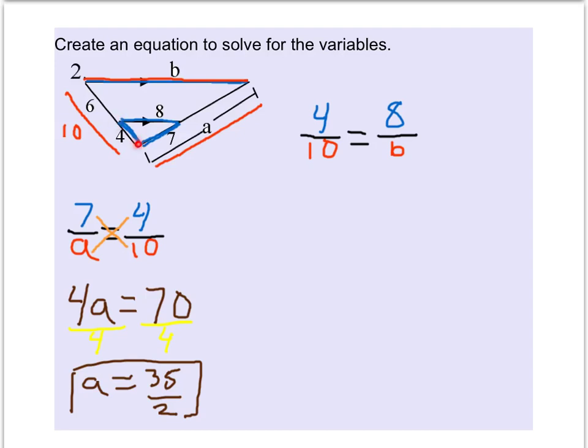Once again we have 4 divided by 10 is equal to 8 divided by b. And then we'll cross multiply. We have 4b is equal to 8 times 10, which is 80, and then divide by 4 on both sides. And now we get b is equal to 20.